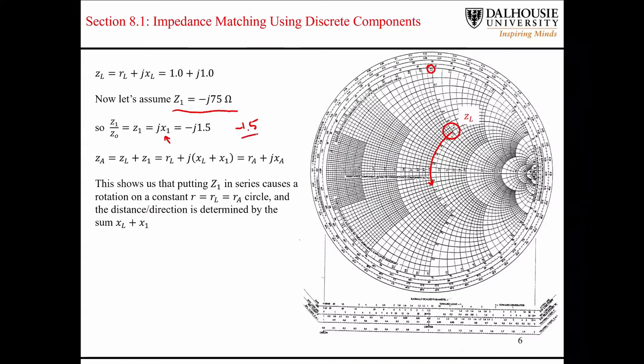So the amount of rotation is going to be determined by this number here, and we can read the scales, the scale on the outside of the Smith chart, to determine the final location.